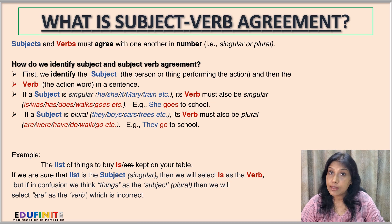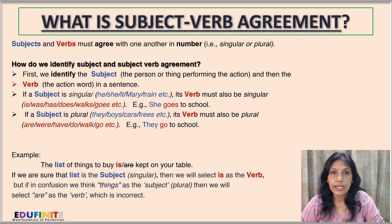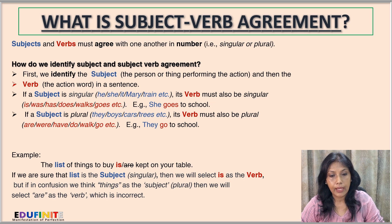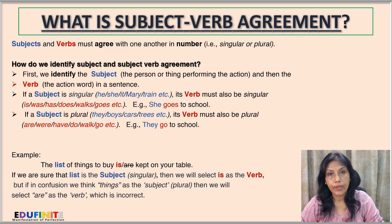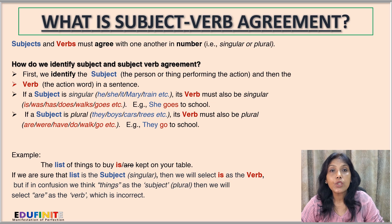If a subject is plural — like they, boys, cars, trees, etc. — its verb must also be plural, like are, were, have, do, walk, go, etc. For example: they go to school.